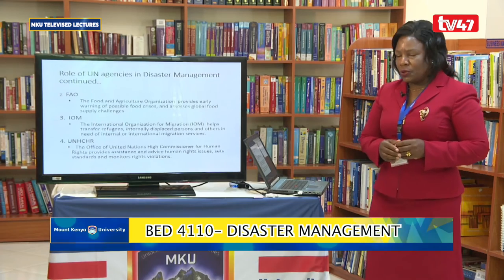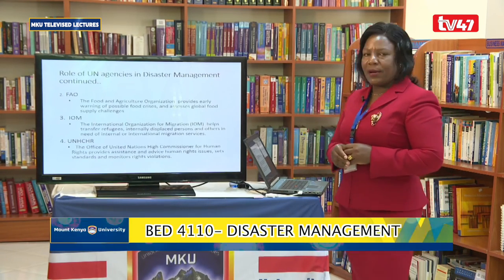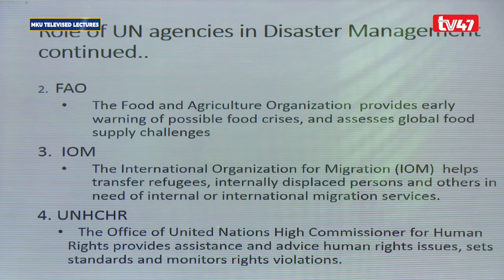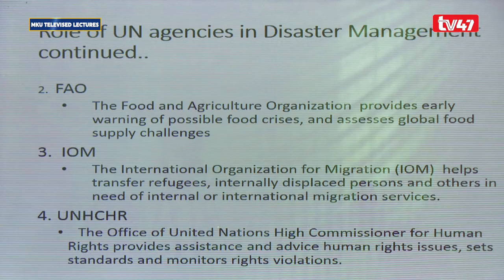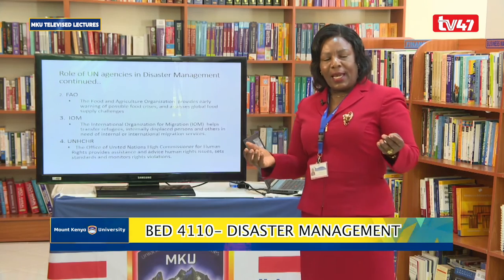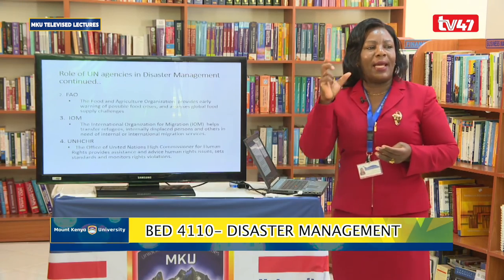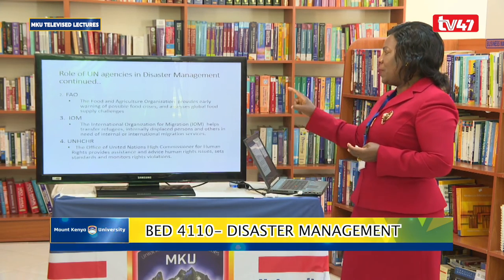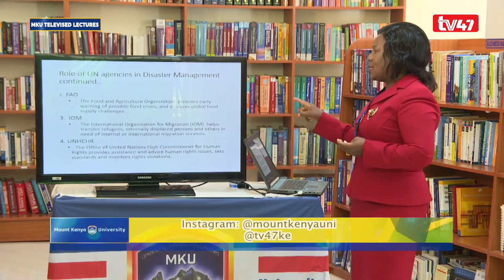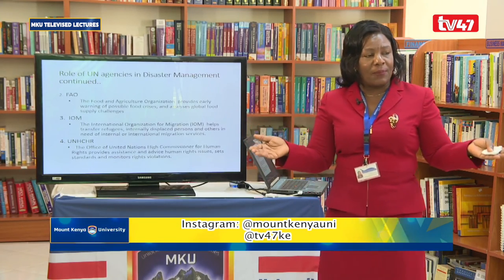Number two is FAO — the Food and Agriculture Organization. FAO provides early warning of possible food crises and assesses global food supply challenges. We know the world faces various disasters that can trigger food insecurity. For example, some countries have experienced desert locusts. FAO issues early warnings to nations about whether countries are food secure or not.